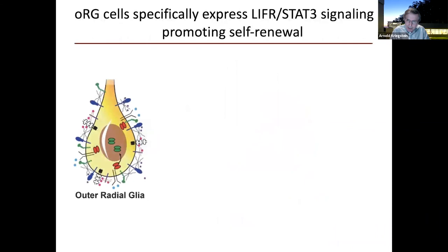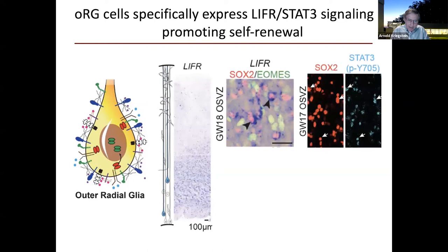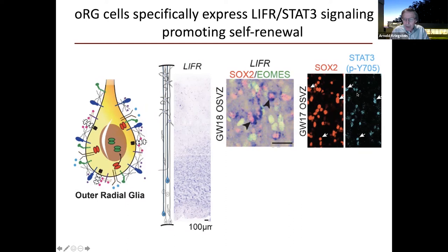Returning to the outer radial glial cell, we decorated it schematically with cartoons of different receptors and intracellular signaling molecules that our WGCNA approach identified as enriched in this cell type. One is the LIF-R/STAT3 pathway — a typical signaling pathway for self-renewal of stem cell populations. Importantly, only the outer radial glial cells expressed enhanced LIF-R/STAT3 signaling, confirmed by images showing the LIF-R receptor expressed uniquely in SOX2 neural stem cells in the outer subventricular zone and completely absent in their daughters, the EOMES-positive intermediate progenitors.